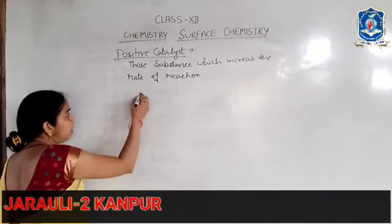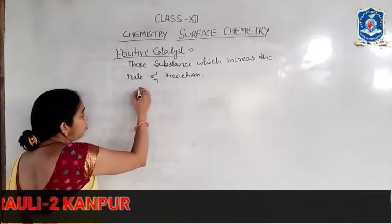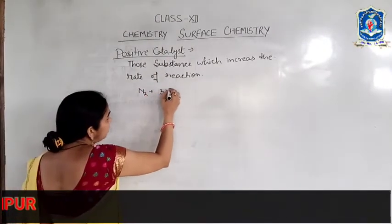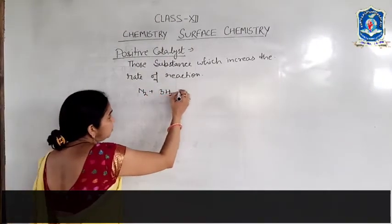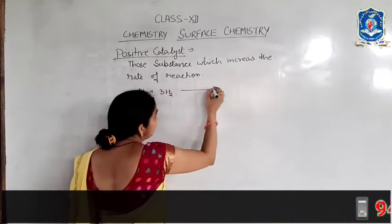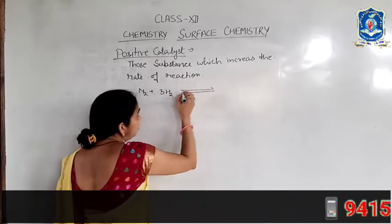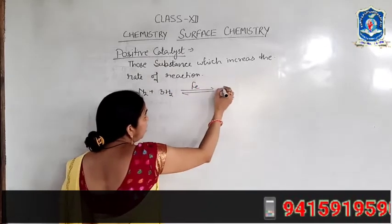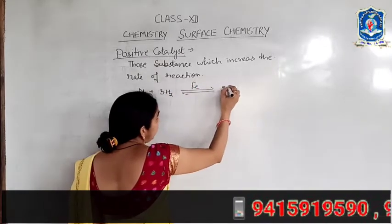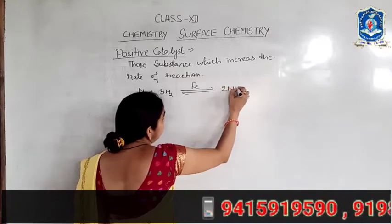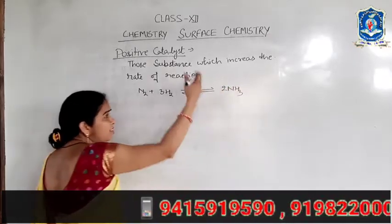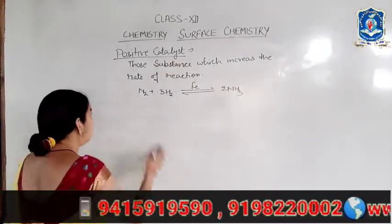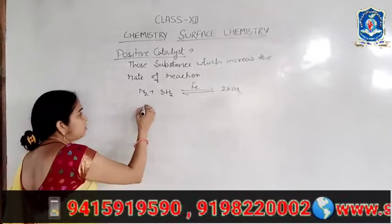For example, the formation of ammonia by Haber's process. In this reaction, iron acts as a positive catalyst which increases the rate of reaction.